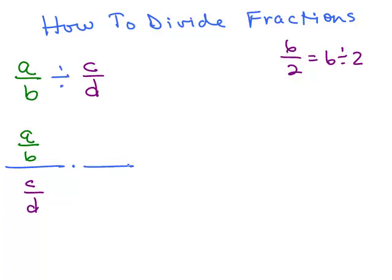I know that I can make an equivalent fraction by multiplying anything I want in the numerator and denominator, as long as it's the same thing. So how about if I multiply both the numerator and denominator by D over C? A over B divided by C over D means A over B over C over D. And then I'm multiplying it by the fraction 1, because D over C over D over C is like 3 over 3, for instance.